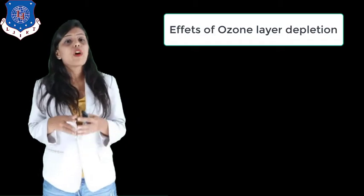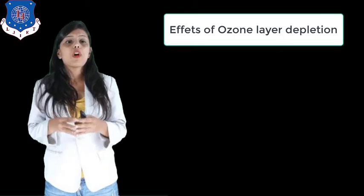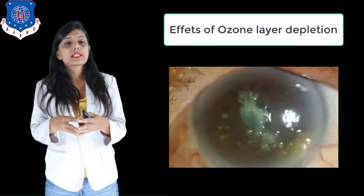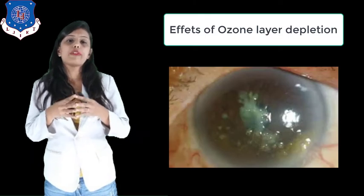The second effect of ozone layer depletion is easy absorption of UV rays by the lens and cornea of the eye will result in an increase in incidents of cataracts.